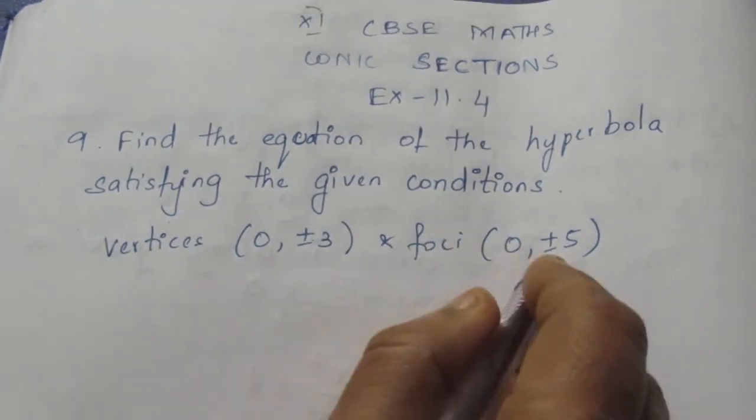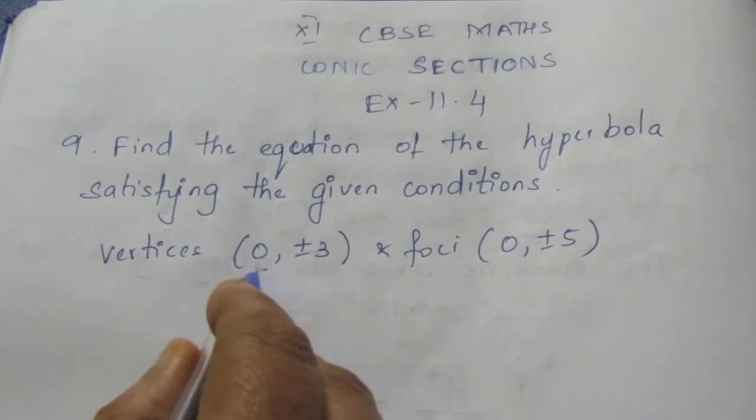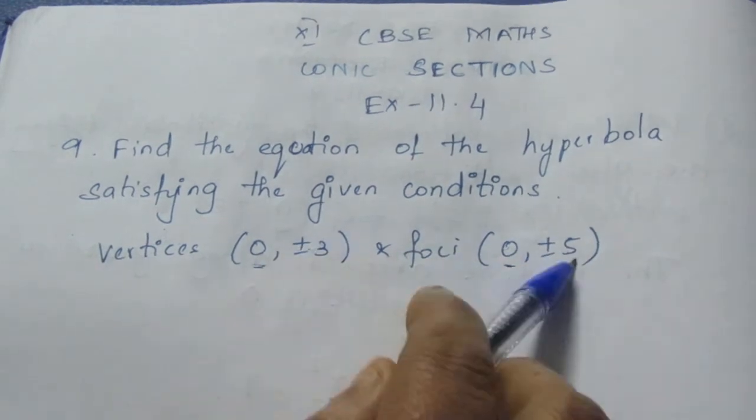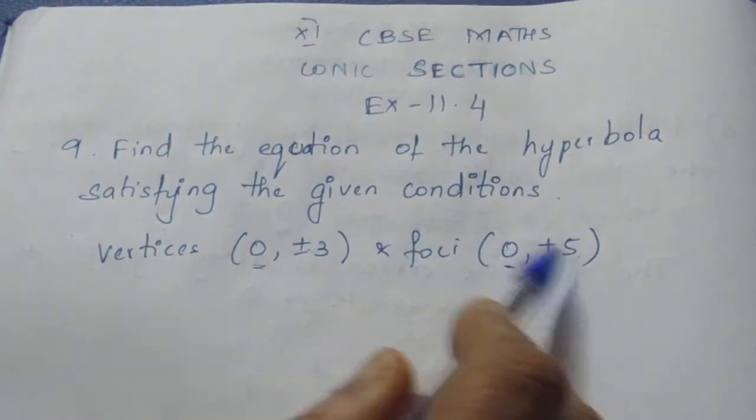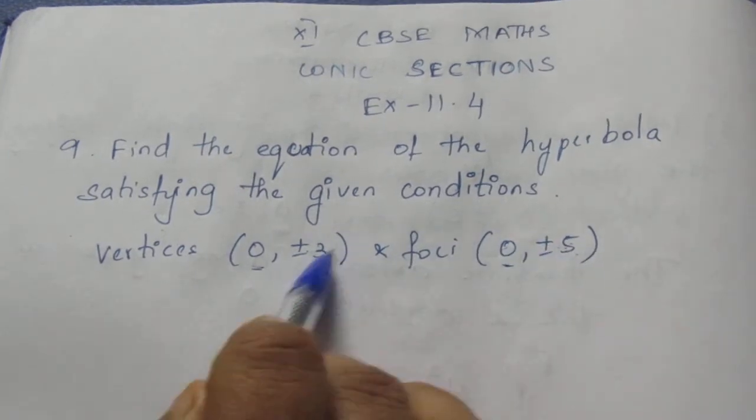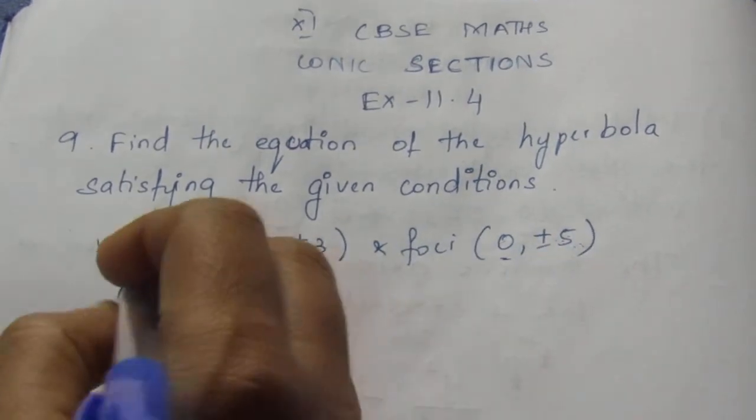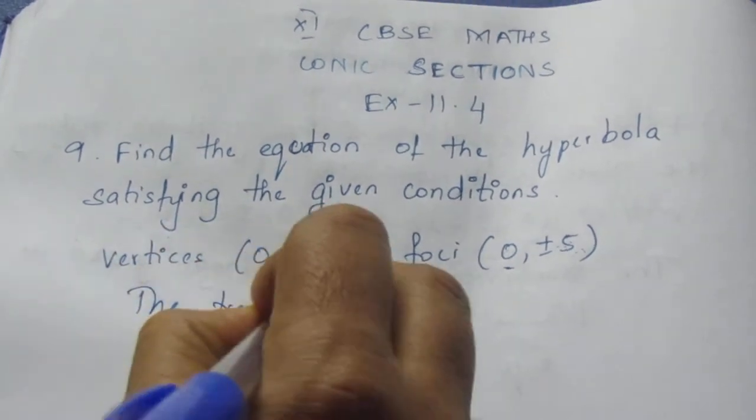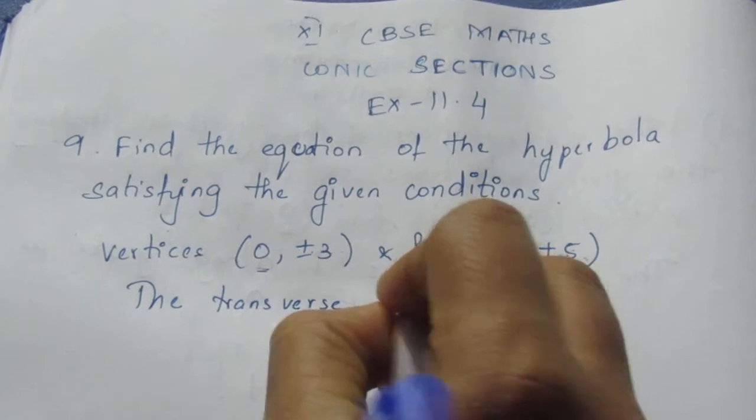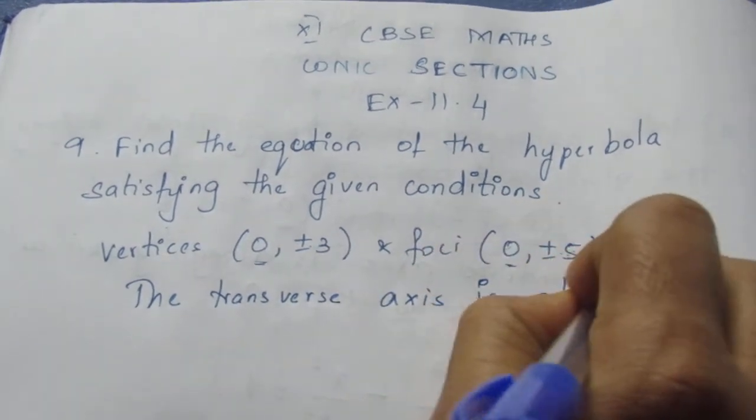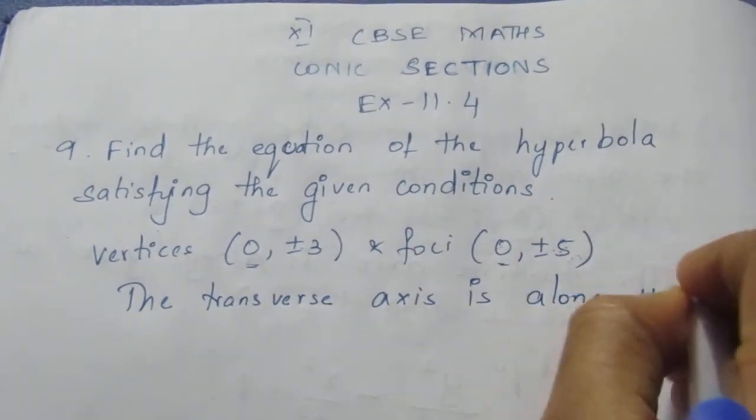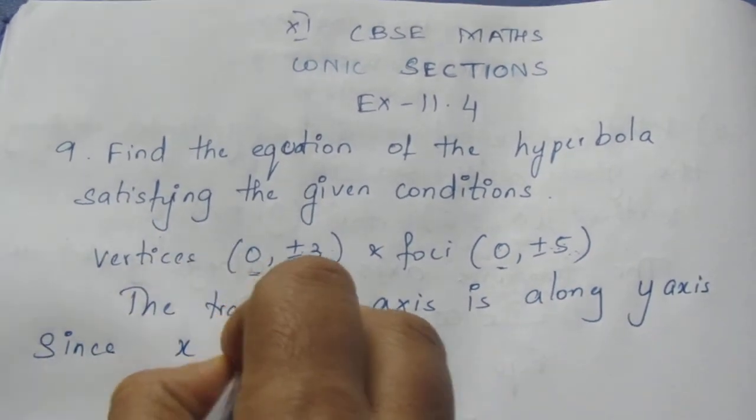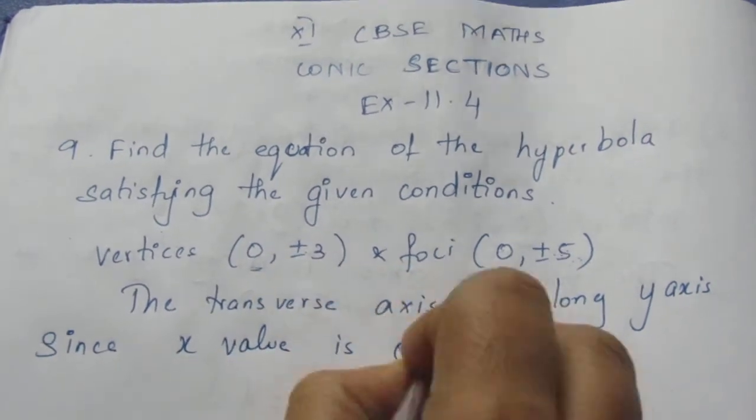Here they have given vertices and foci. If you see there is 0 in the x-axis, that means we have numbers on the y-axis. This tells you that the transverse axis is along to the number value, that is to the y-axis. The transverse axis is along y-axis since x-value is 0.